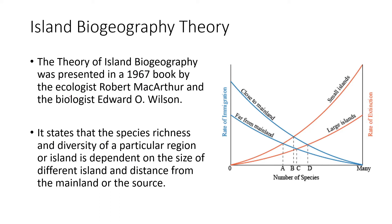Coming to island biogeography theory, it's a theoretical concept we have to understand when we talk about diversity distributed with respect to different mainland as well as island. This theory was presented by Robert MacArthur and Edward Wilson in their book 'The Theory of Island Biogeography' in 1967, where they talked about species richness and diversity as a factor of the size of different islands as well as the distance from the mainland or source.